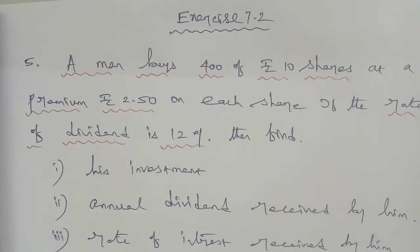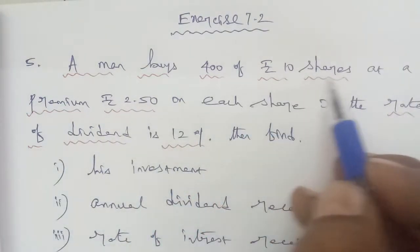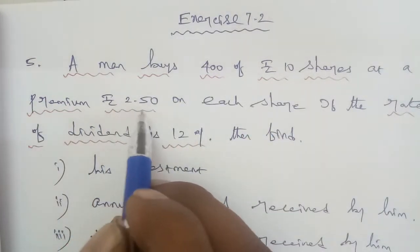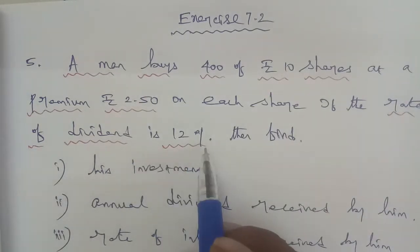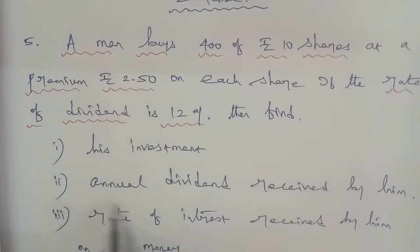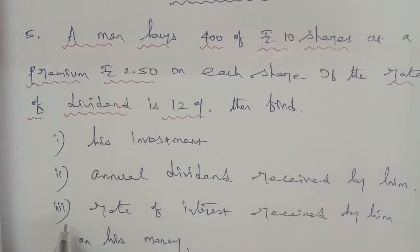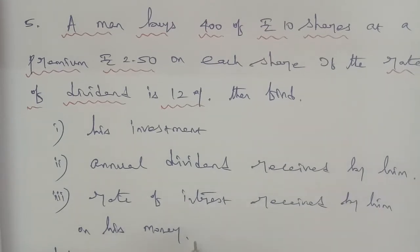Hi students, this is Business Maths Exercise 7.2, question number 5. A man buys 400 of rupees 10 shares at a premium of rupees 2.50 on each share. If the rate of dividend is 12 percent, then find: (i) his investment, (ii) annual dividend received by him, (iii) rate of interest received by him on his money.